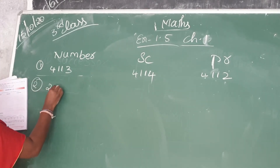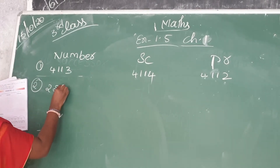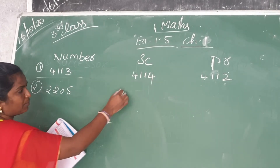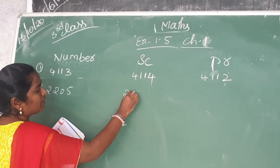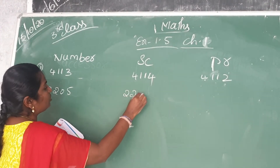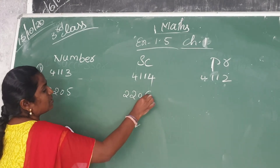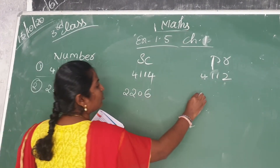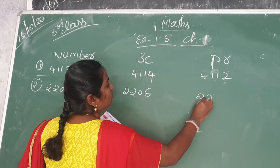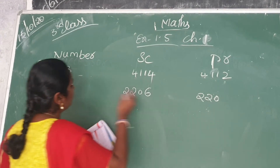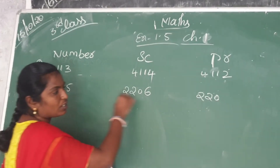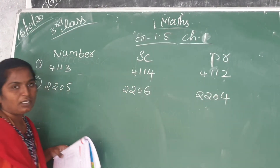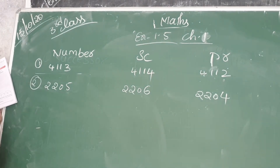Second one: 2205. Successor means after number — after 2205 is 2206. Predecessor means before number — before 2205, the number before 5 is 4, so the predecessor is 2204. Write the successor and predecessor like this.